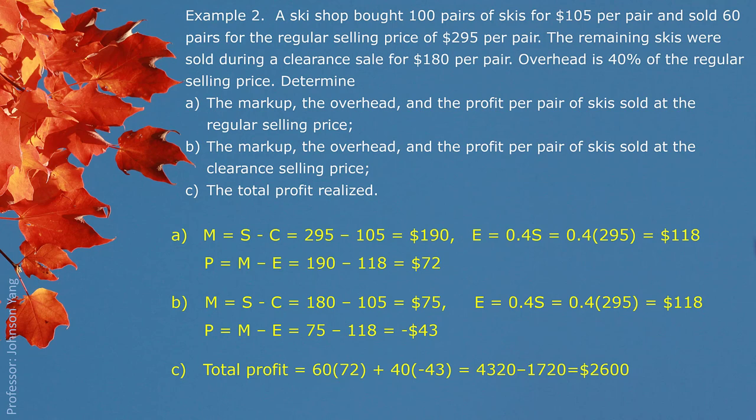40 pairs, each pair we lose $43. Put them together, overall for these 100 pairs of skis, the profit for the shop is $2,600.